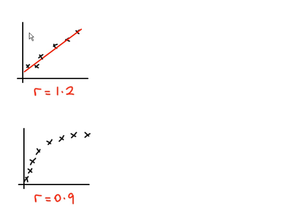For this graph here, the PMCC value of 1.2 is incorrect, because R, the PMCC, only takes a value between minus 1 and plus 1 in that range. This is outside the range, so it's wrong.